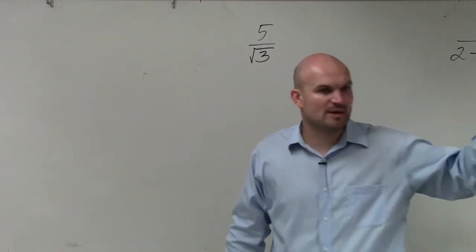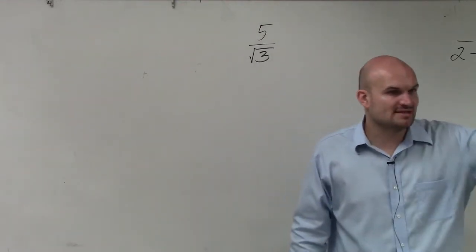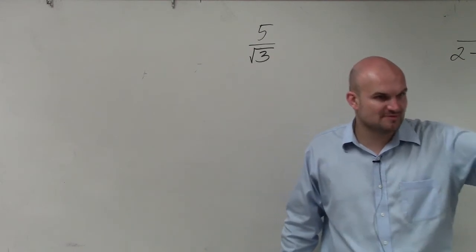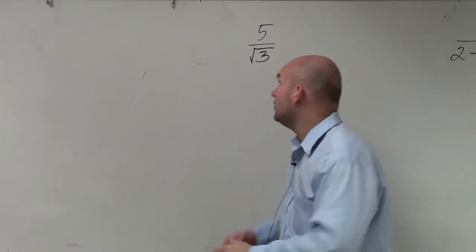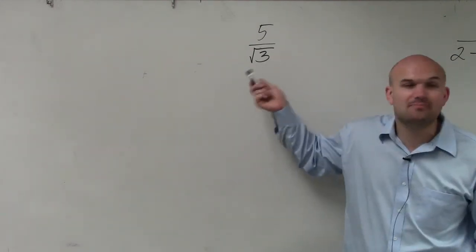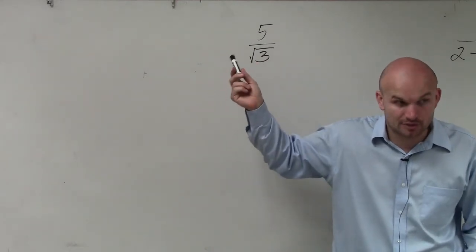Numbers that are multiplied by themselves, right? Like 1 times 1, 2 times 2, 4 times 4, 3 times 3. So I can't take the square root of 3, but I can take the square root of 3 times 3, correct?